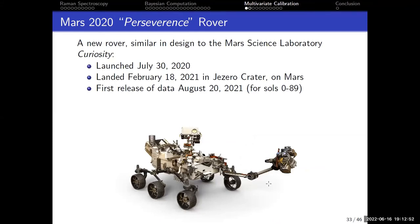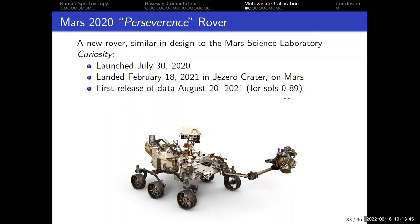Now let's talk about some real data. The Perseverance rover - originally known as the Mars 2020 mission - successfully parachuted down to the surface of Mars in February of last year and is still operating in Jezero crater, its selected landing site. The first public data release was in August of last year for the first 90 days on Mars. Not only the Raman spectroscopy data but all measurements and photos from those three months are freely available to download on the NASA website.